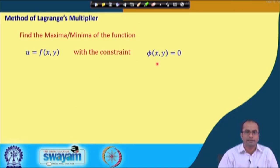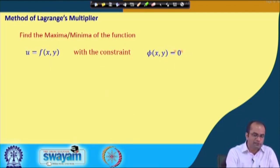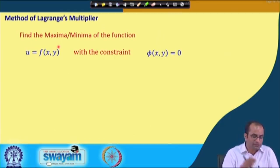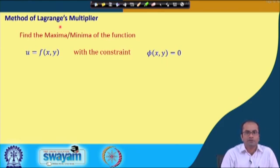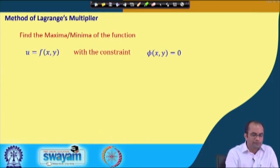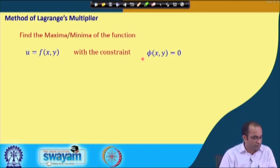Those boundaries were actually additional constraints on the function — x = 0, or y = 0, or a line y = 9 - x. There was an additional condition along with the function. There we substituted the value of y into f(x, y), and the function was converted into a function of one variable, which we discussed along each of these conditions.